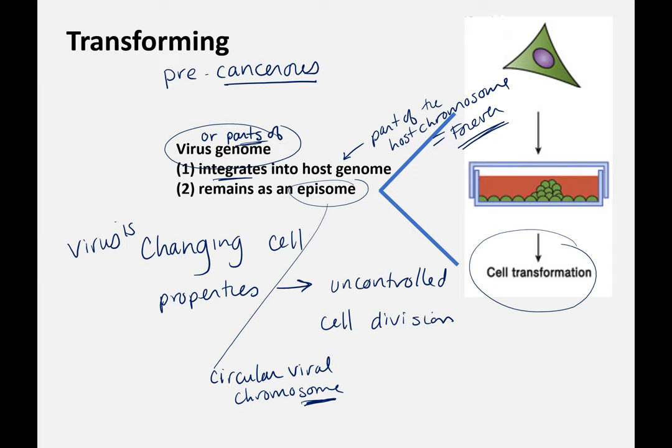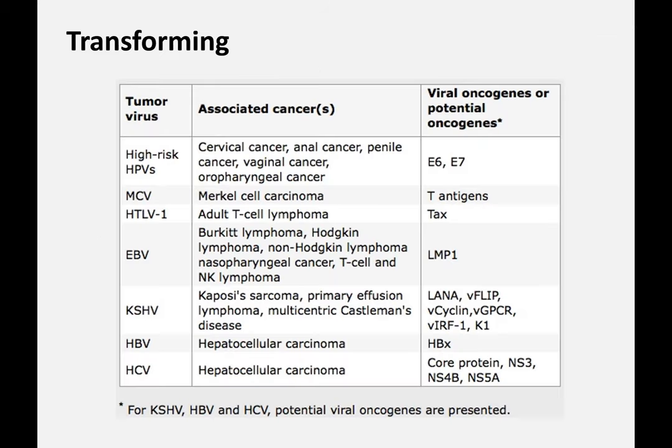Some viruses, especially the herpes-type viruses, remain as an episome — a circular viral chromosome. Like Epstein-Barr virus: the viral chromosome replicates every time the cell replicates, and some of the genes expressed can transform the cell into a rapidly dividing cell. With HPV, part of the genome integrates into the host but is no longer able to produce viruses — it's now defective — but it produces proteins that tell the cell to keep dividing. Examples of tumor/transforming viruses include human papillomavirus, hepatitis B, hepatitis C, and Epstein-Barr virus.